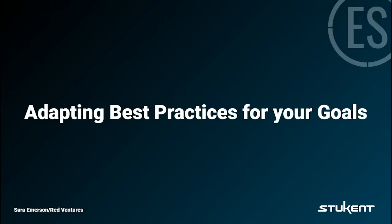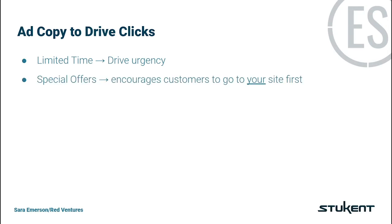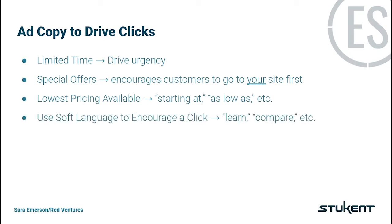Now that we've seen best practices in action, let's talk through adapting these best practices for your specific business goals. When your primary goal is to drive click volume, your ad copy should be a very low barrier to entry for your searcher. One of the ways to do this is to utilize limited time messaging, which drives urgency so the customer must click now or risk missing out on an offer. Another way to drive urgency is to prominently display special or exclusive offers in your copy. Not only does that make the customer want to click now instead of later, it will also drive them to check out your site before going to a competitor's. When your goal is to get the customer to click to your site, always use the lowest price point available. Finally, use soft language as much as possible — encourage customers to click to compare products or to learn more, making them more comfortable with the first click, knowing that you're not necessarily pushing them to convert right away.